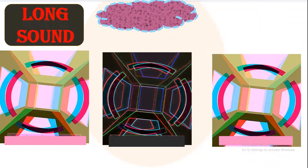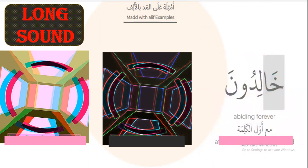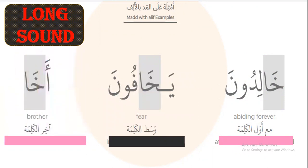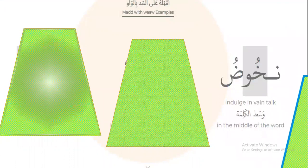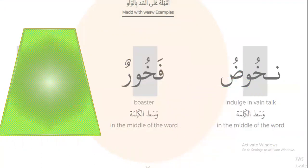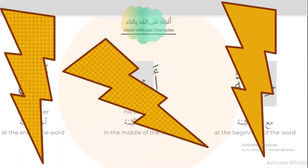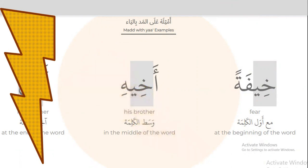Long vowels — how to read words with long sound. Please repeat after me. Mad with alif examples: khaliduna, yakhafuna, akha. Mad with waw examples — please listen and repeat: nakhoudu, fakhrun, unfukhu. Mad with ya examples — please listen and notice where letter Kha is: at the beginning, middle, or end. Examples: khaifatan, akhihi.